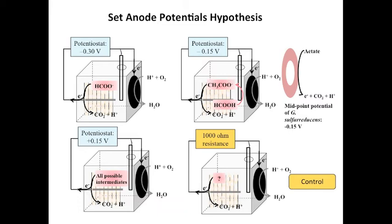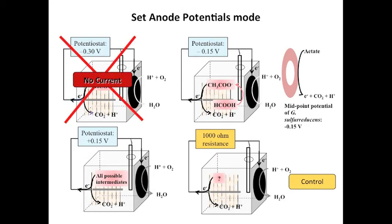It has recently been shown that different microbial communities can be developed on an anode by controlling the anode potential. In order to improve the performance of MFCs fed formic acid, we hypothesized that effective syntrophic communities could be developed by controlling the anode potential. Three different anode potentials — minus 0.3, minus 0.15, and positive 0.15 volts versus standard hydrogen electrode — were used in the study. Setting the anode potential at minus 0.3 volts, we can bypass the acetate oxidation pathway and only allow formic acid to be oxidized. Minus 0.15 volts was used because it is the midpoint potential for Geobacter sulfurreducens when oxidizing acetic acid in MFCs. Positive 0.15 volts was used because it allows oxidation of all possible intermediates and may produce more diverse communities than lower potentials.